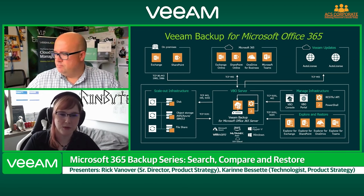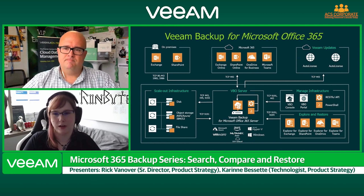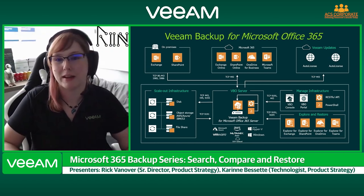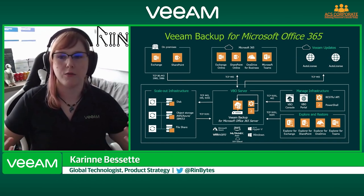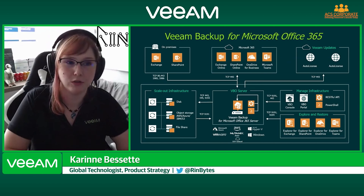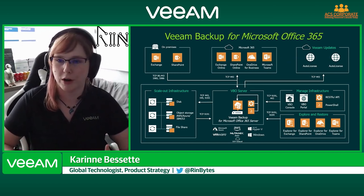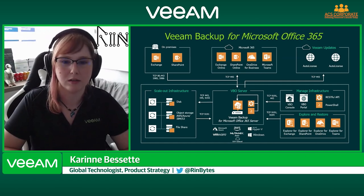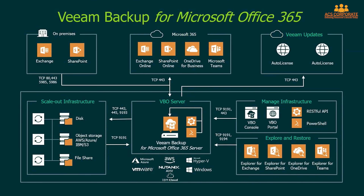We started in the center of this chart with Veeam Backup for Microsoft Office 365 Server. This is really the heart of all communications, aggregations of jobs, schedules, and the command center. Off of this you get all your resources — starting at the top, you can do on-prem, Office 365 only, and hybrid infrastructures all aggregated through the same console. From there you can send data out to proxies, different repository types, S3-compatible object storage, or a file share.